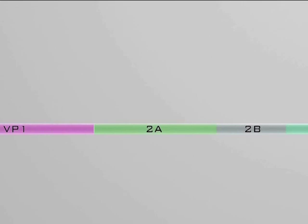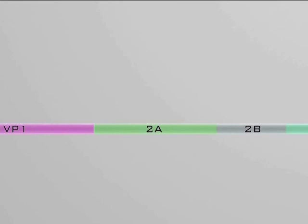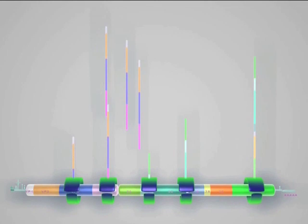This polyprotein must be cleaved into its individual components for replication to start. First, the 2A protease autocleaves, and thus separates the structural protein precursors from the non-structural ones.